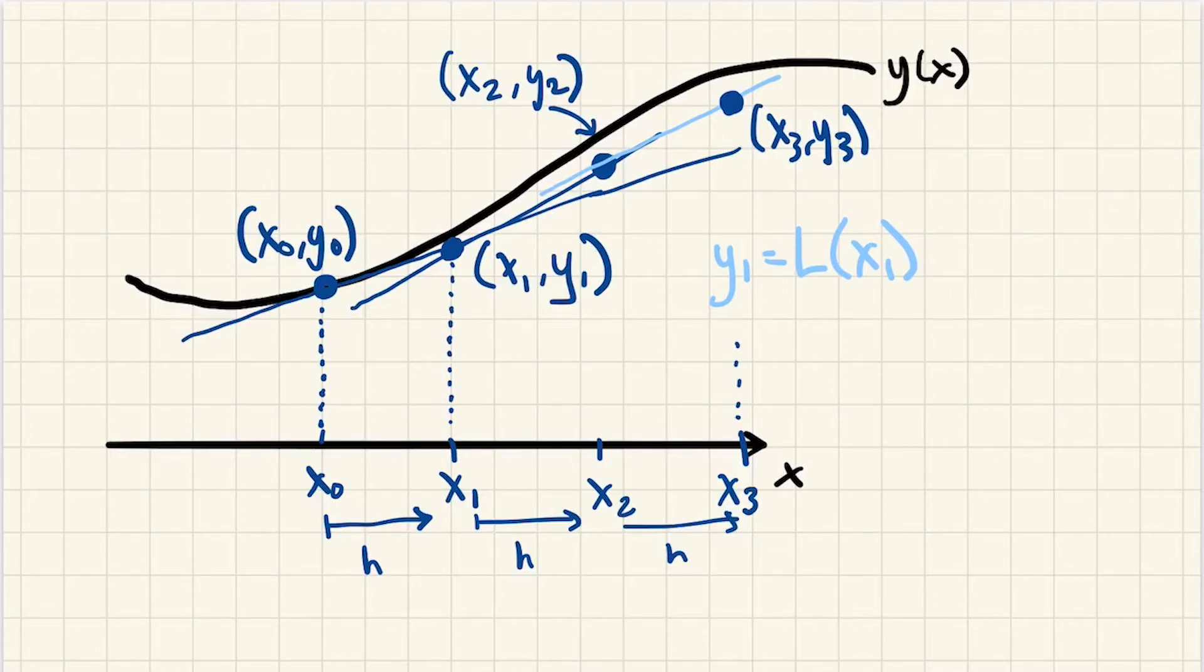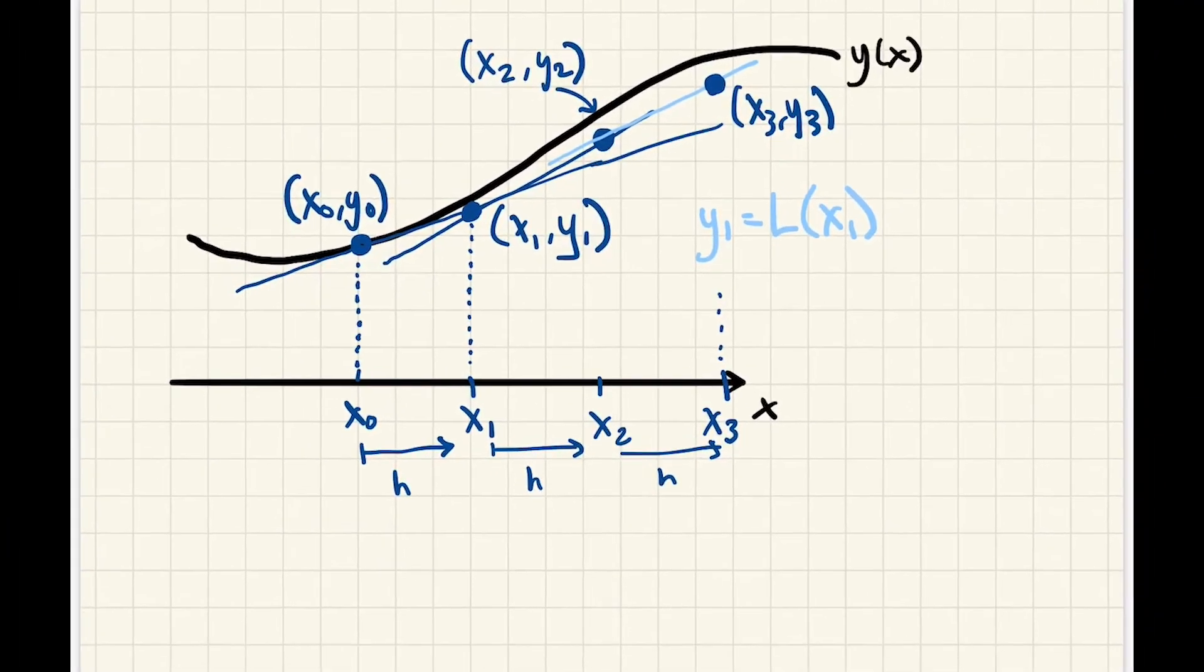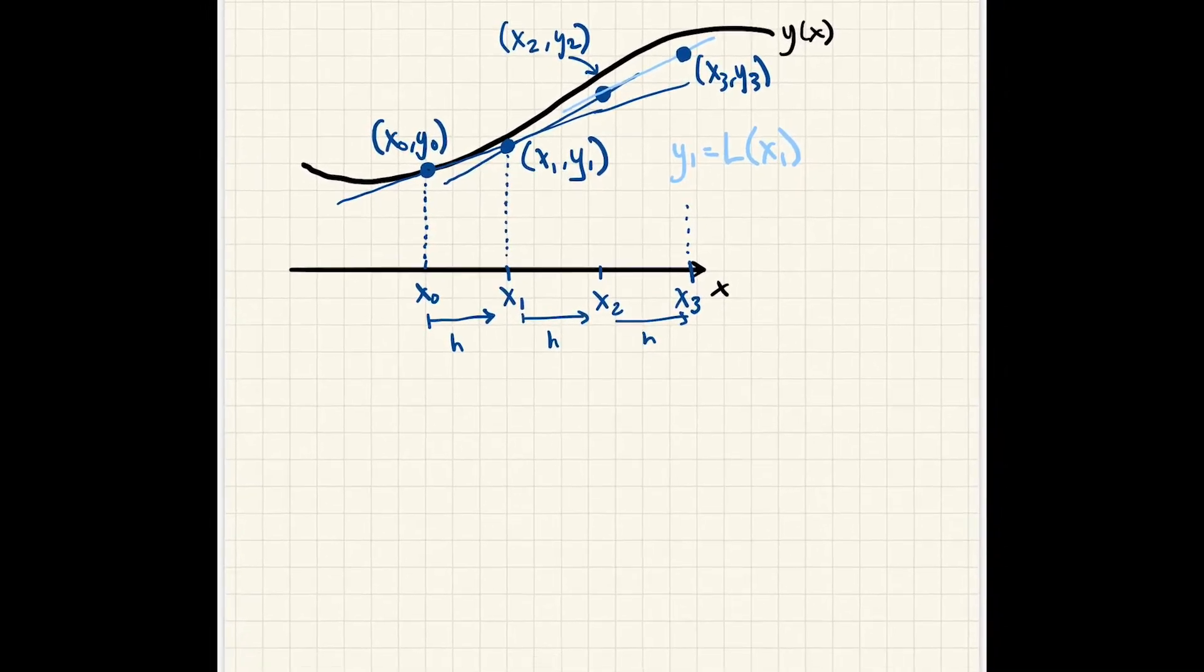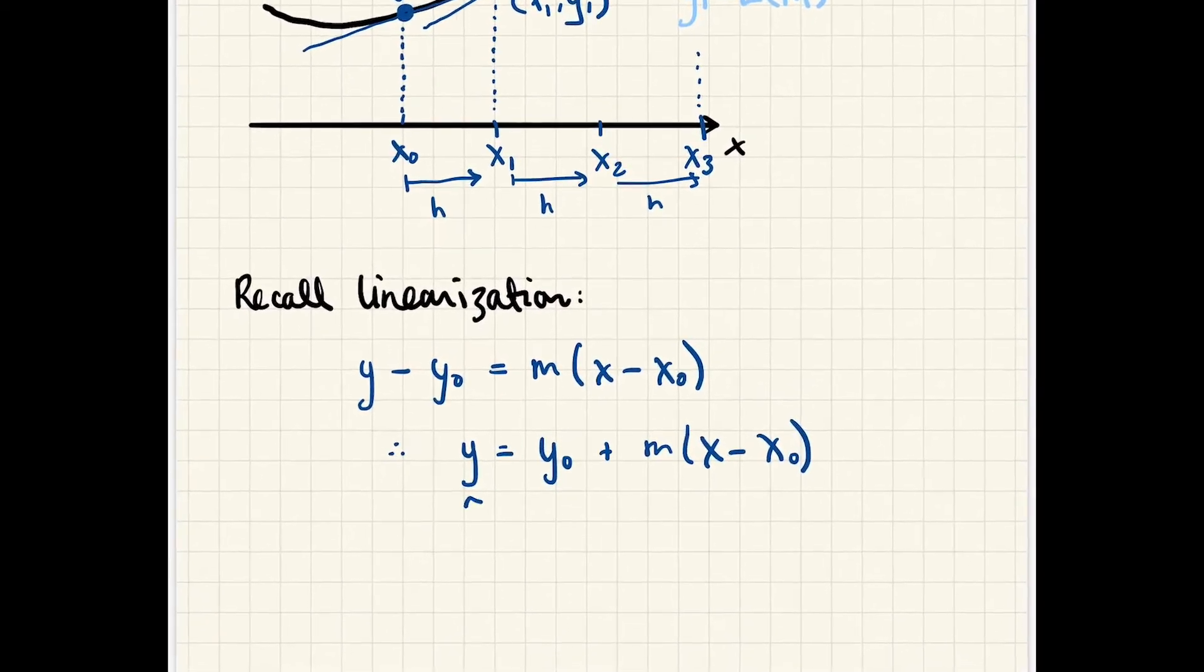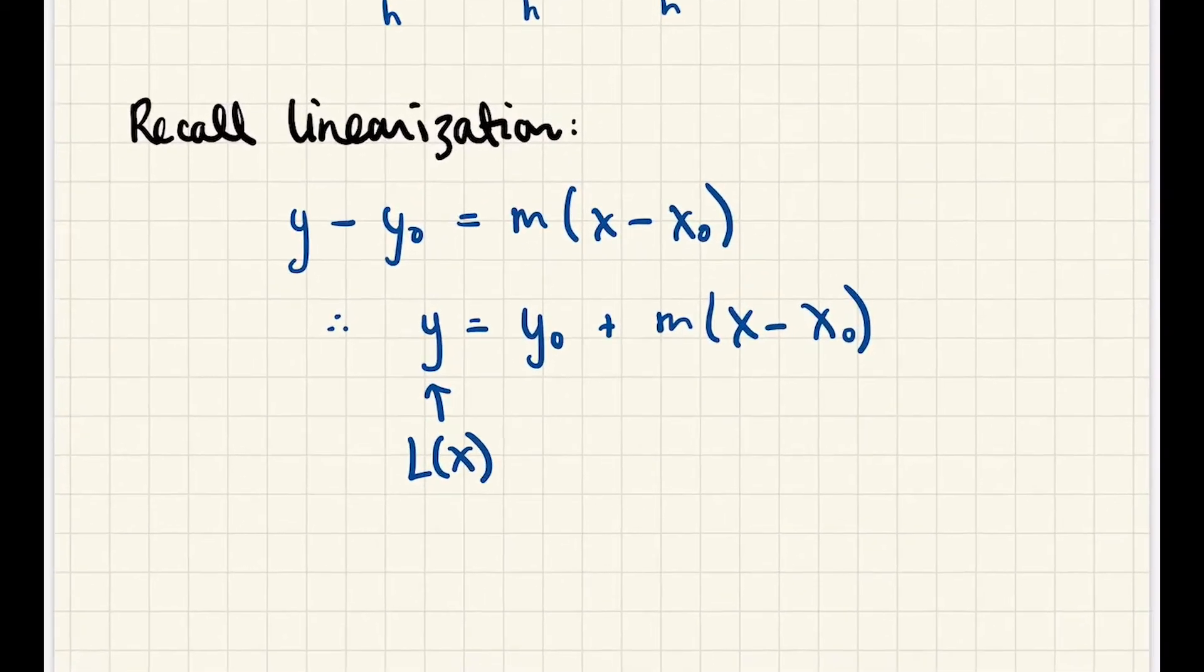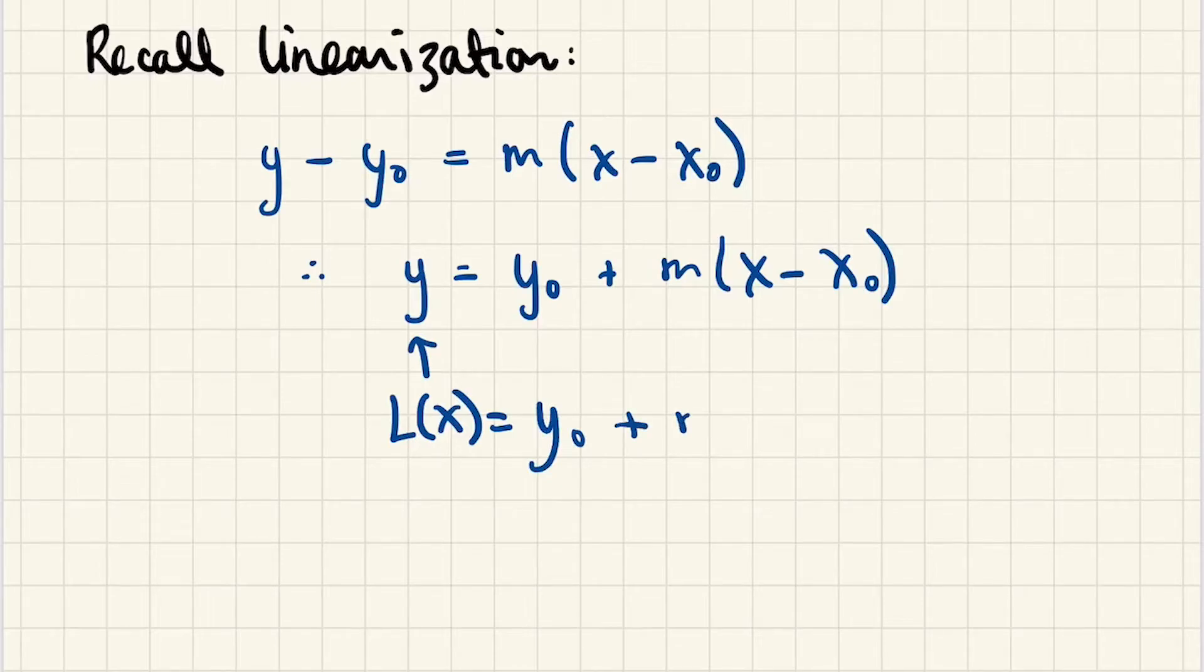Now, this technique is called Euler's method. Let's quickly recall how to find a linearization. We remember from algebra that the equation of a line through a point is given by y - y₀ = m(x - x₀), or you could write y = y₀ + m(x - x₀). And then we could just call this guy our linearization. L(x) = y₀ + m(x - x₀). But m is of course the slope.